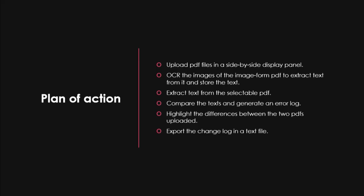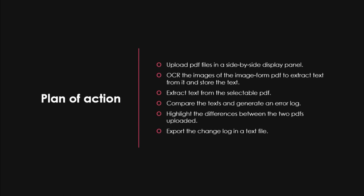So what is our plan of action? First, we'll upload both PDFs side by side and display them as a stack of images. Then we'll OCR the images from the image-form PDF to extract text, and applying all our observations, generate a very accurate text from the OCR'd image PDF. After that, we'll extract the text from the selectable PDF, compare these texts to generate an error log, highlight the differences, and export that log as a text file.